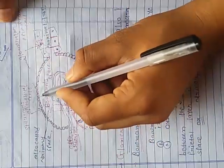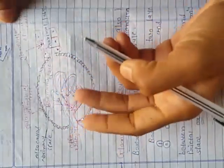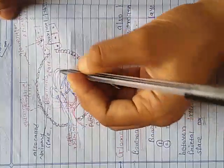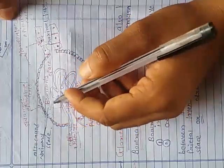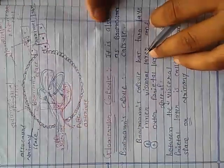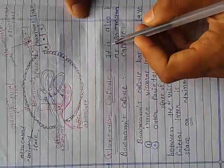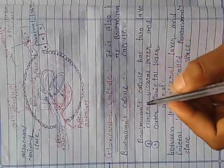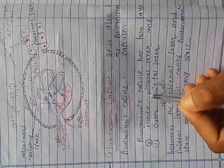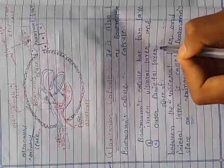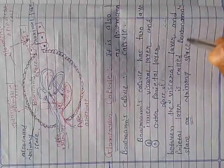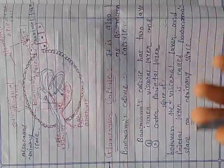The glomerular capsule has an outer parietal layer and inner visceral layer. The glomerular capsule has two layers: the inner visceral layer and outer parietal layer. Now we'll discuss the glomerular membrane.